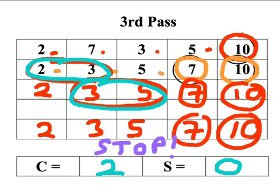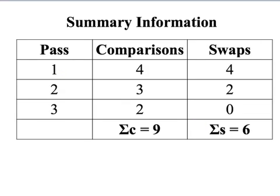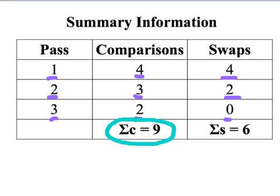On the third pass there were 2 comparisons but no swaps. We've bubble sorted the numbers into ascending order: 2, 3, 5, 7, and 10. To summarise: on the first pass, 4 comparisons and 4 swaps; second pass, 3 comparisons and 2 swaps; third pass, 2 comparisons and 0 swaps. Using sigma notation: total comparisons Σc = 9, total swaps Σs = 6. It's very useful to tabulate this information, especially when comparing efficiency and studying the order of an algorithm.